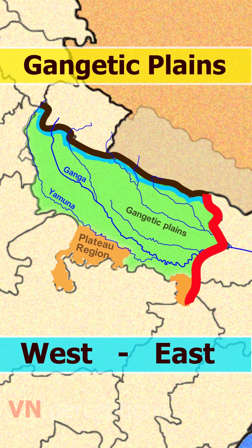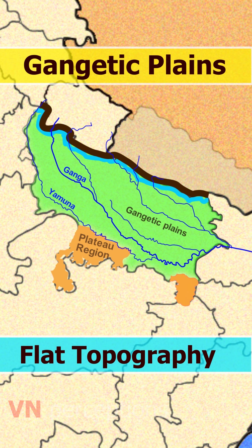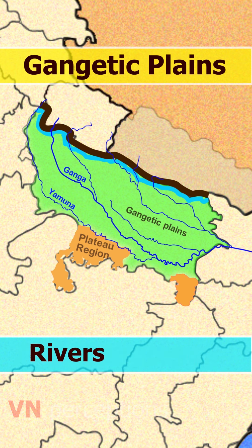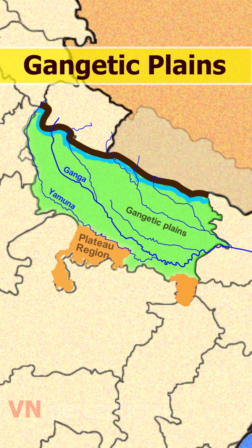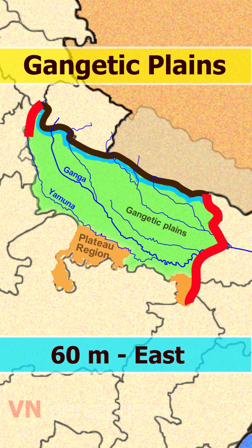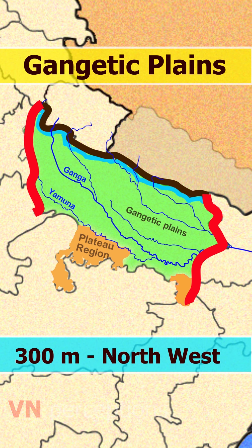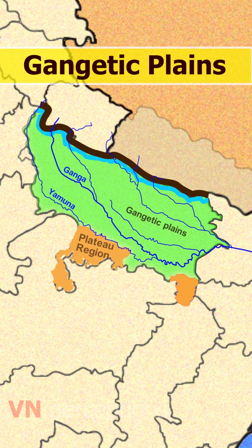The plains stretch from east to west and cover most of the central portion. They have a flat topography and comprise several physical features like rivers, lakes and ponds, with elevation ranging from 60 m in the east to 300 m in the northwest, with a gradient of 2 m per square kilometer. This entire expanse of alluvial terrain is divided into three sub-regions.